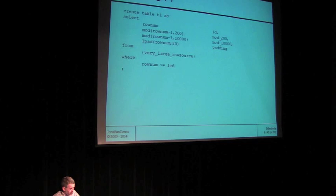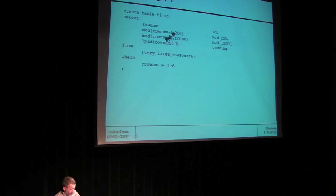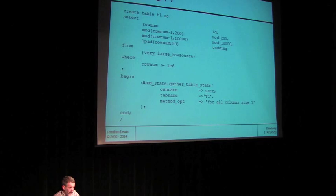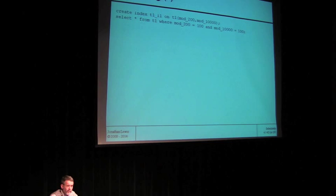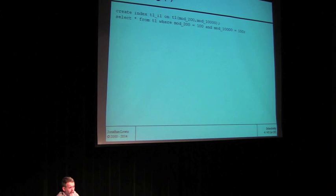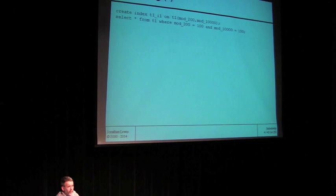I'm just going to do a CREATE TABLE statement. I've got a very large number of rows — generating a million rows which I'm going to select. I've got two columns: mod 200 and mod 10,000. There are 200 distinct values in one and 10,000 distinct values in the other. Having created that data, I'll create stats with size 1, so I'm not creating histograms. Then I create an index on those two columns — mod 200 and mod 10,000 — and do a SELECT where mod 200 equals 100 and mod 10,000 equals 100.